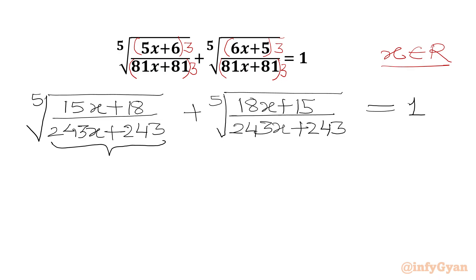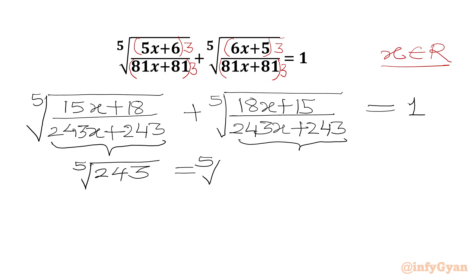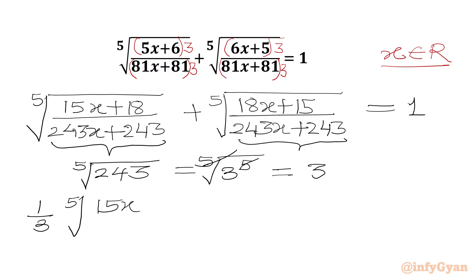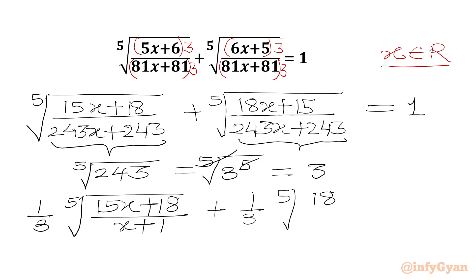Now we will take 243 common from the denominator. So we will get the fifth root of 243 in the denominator, which we can further write as fifth root of 3 to the power 5. Since 3^5 is 243, the fifth root and power 5 cancel, giving us 3 in the denominator. Once we take 243 common from the radicand's denominator, we write: one-third times fifth root of (15x+18)/(x+1) plus one-third times fifth root of (18x+15)/(x+1) equal to 1.